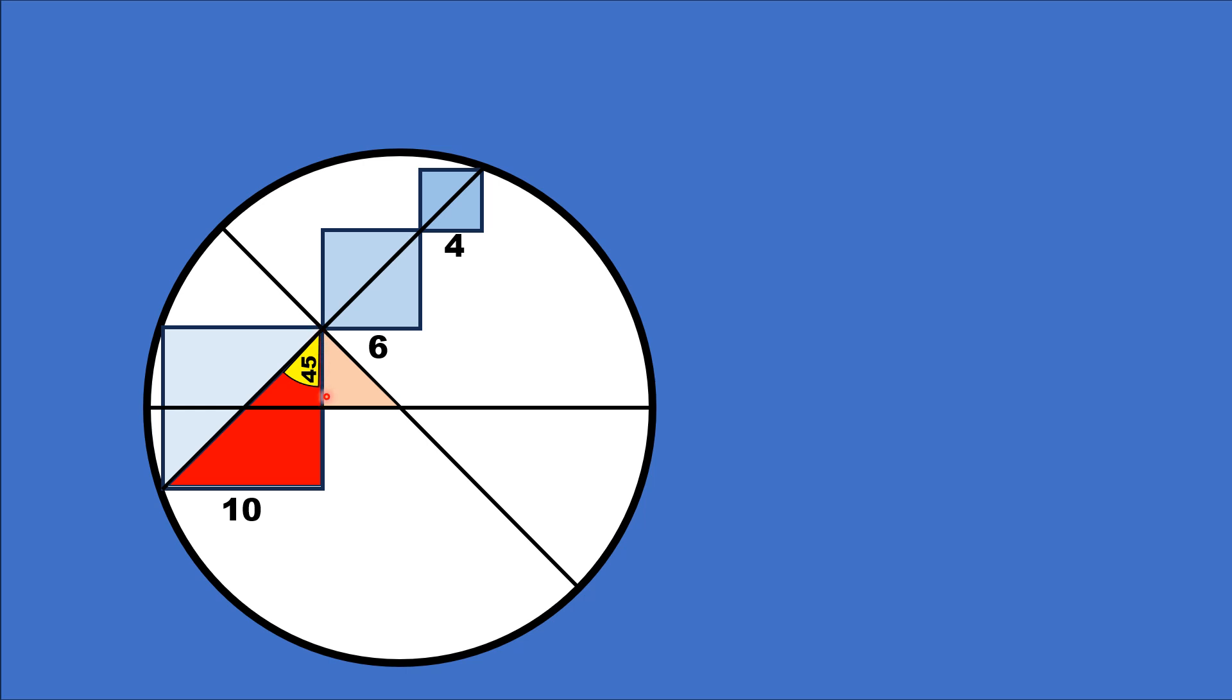This length of this triangle is 5 units because this is half of the side of the square. As the side length of the square is 10, this length is 5 units. This means this length is also 5 units.